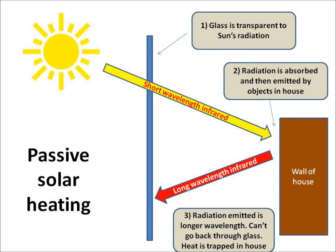Now we're looking at passive solar heating, which heats up our houses and our greenhouses. The sun emits infrared radiation of a short wavelength that can pass through glass because glass is transparent to it. The radiation is then absorbed by objects in the house and emitted by them but at a longer wavelength. That wavelength then can't go back through the glass, and so heat is trapped in the house.